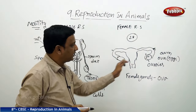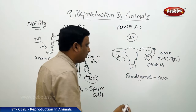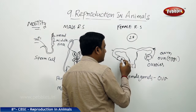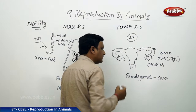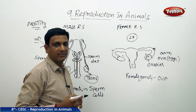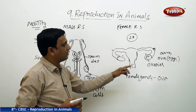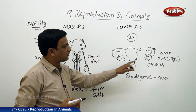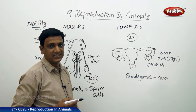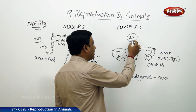In the male reproductive system, testes can produce sperm cells in large numbers — millions of sperm cells are released at a time, and they are very small in size. The ovaries, however, produce only one ovum per month. In a cycle of 28 days, one ovum is produced. The two ovaries produce ova alternately — one month this ovary produces one ovum, the next month the other one produces. So only one egg cell is produced in a period of 28 days.